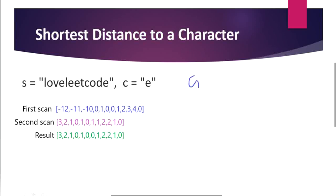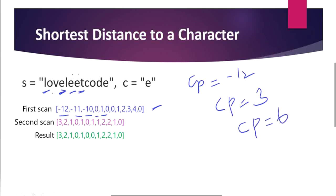Our c_position is initialized to minus 12, the size of the string. In the first forward scan we update the result array: at index 0 the value is 0 minus 12 = 12 (absolute), at index 1 it is 11, and so on, until we find the first e. Once we find e at index 3, c_position updates to 3. Moving to index 4, the value is 4 minus 3 = 1; at index 5 it is 0, at index 6 it is 0 — and c_position updates to 6. From index 7 onward: 7 minus 6 = 1, 8 minus 6 = 2, 9 minus 6 = 3, 10 minus 6 = 4. Finally encountering e at index 12, c_position becomes 12 and the forward loop ends.